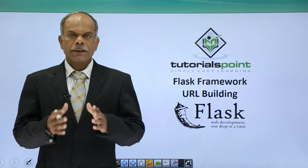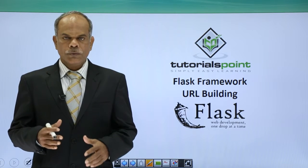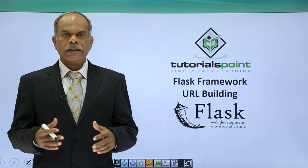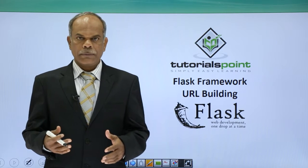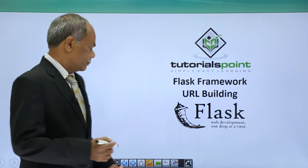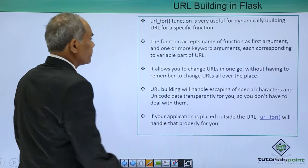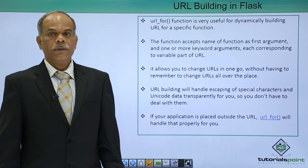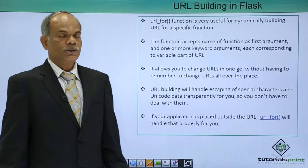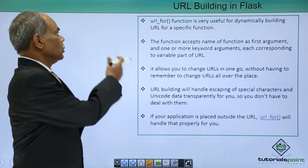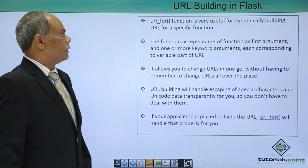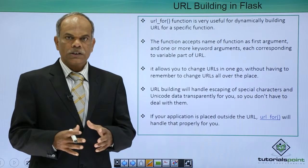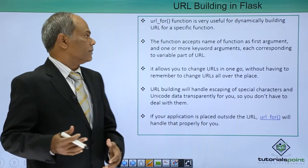Hello friends. In this video we shall see how we can build the URL dynamically in our Flask application. For this purpose the Flask API contains a function called url_for, which is a very useful function to construct the URL in a dynamic fashion.